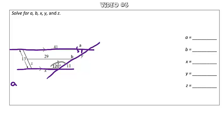So the measure of angle A plus 120 degrees equals 180 degrees. So therefore, using inverse operations, the measure of angle A is 60 degrees.